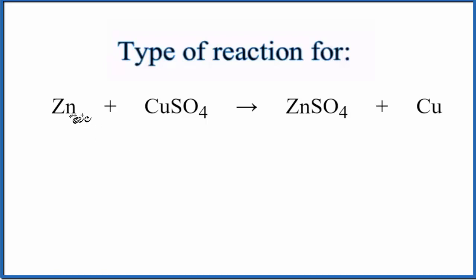In a single displacement reaction, this metal here comes in and it pushes the copper out. So the copper is all by itself here, and now the zinc is bonded to the sulfate. So we get zinc sulfate, single replacement reaction.